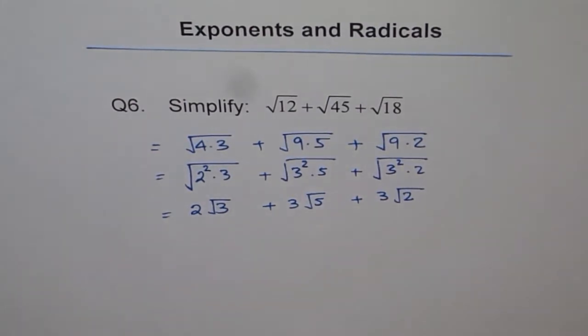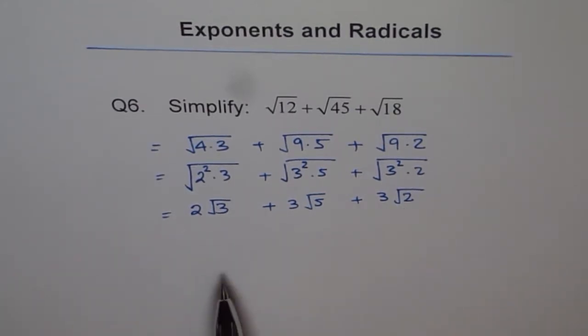So that is a simplified version of the given expression: square root 12 plus square root 45 plus square root 18. Now I can't simplify them further because within the radical we have different square roots.